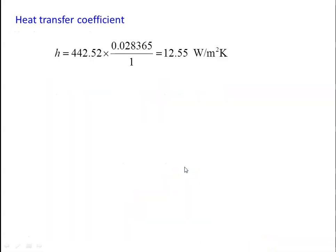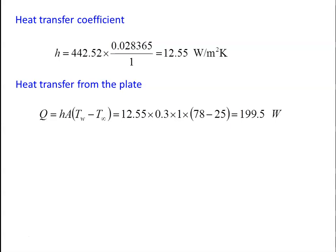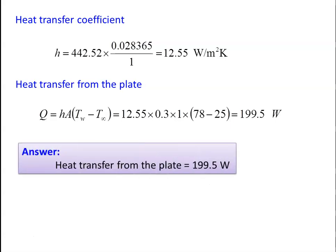Average heat transfer coefficient h = 442.52 × k / L = 442.52 × 0.028365 / 1 = 12.55 W/m²·K. Heat transfer from the plate: Q = h × A × ΔT = 12.55 × (0.3 × 1) × (78 − 25) = 199.5 W. The heat transfer from the plate is 199.5 watts.